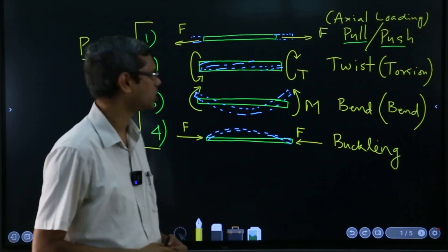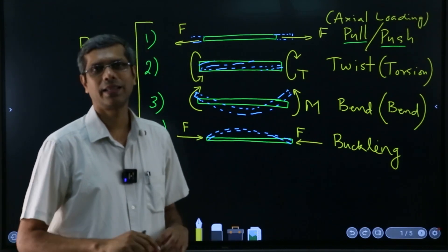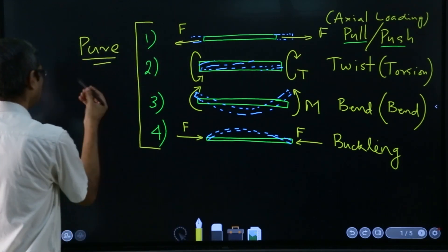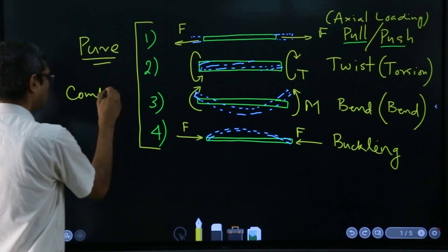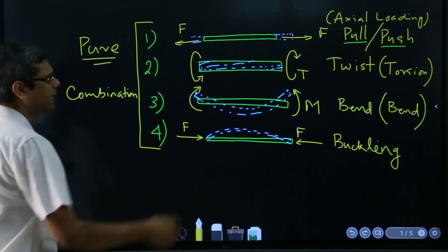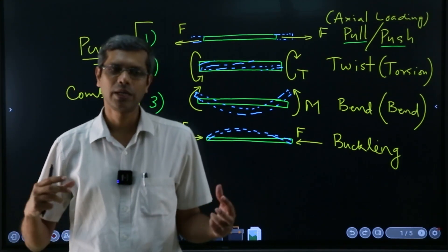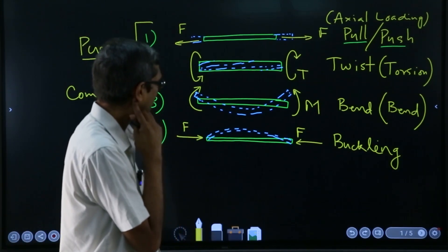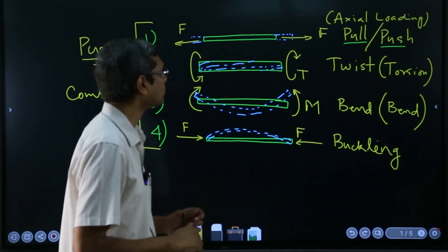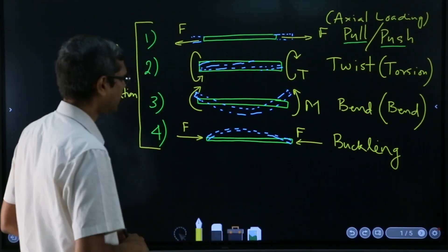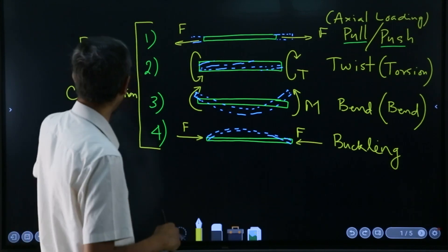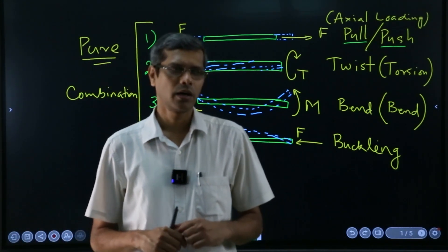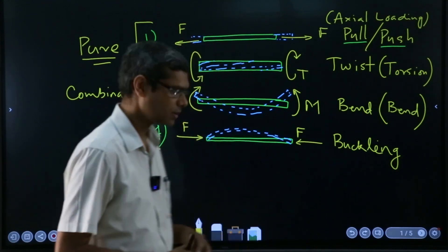The flow that we will take is first I will discuss all these things in the pure forms: pure loading of axial pull or push, pure twisting, pure bending, and then pure buckling. And then we can look at maybe combination of any or many of these types of deformations acting on the same body.